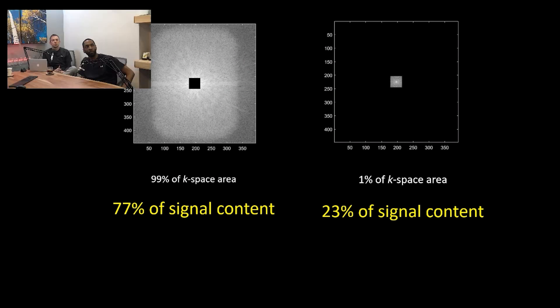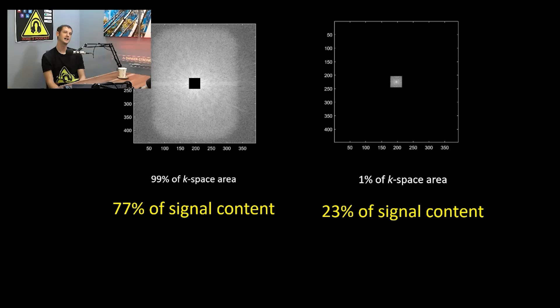How long did it take to truly understand k-space? About three years — and that's the short answer. That's actually reassuring.